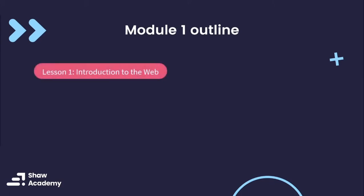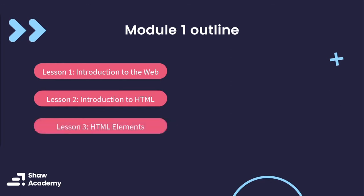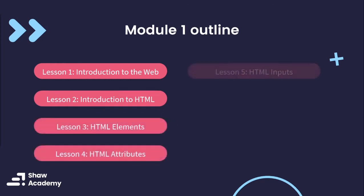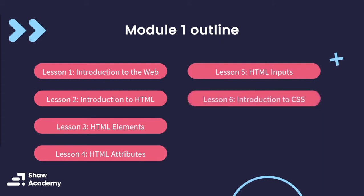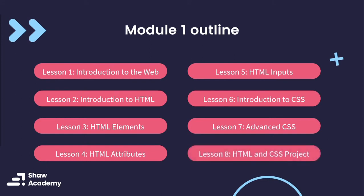In our first lesson today, we are going to be focusing on the introduction to the web. In lesson two, we'll move on to introduction to HTML and start with our coding. Then we'll move on to HTML elements, after which we'll cover HTML attributes. In lesson five, we'll have a focus on HTML inputs. Once we've wrapped up everything HTML, in lesson six we'll start with an introduction to CSS. Then we'll move on to more advanced CSS topics in lesson seven. And finally, probably the most exciting part of this module is that you'll have an HTML and CSS project by the end of this module.